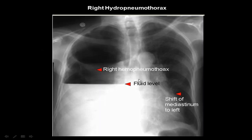There is another pathology: a combination of both air and fluid in the pleural space, which we call hydropneumothorax. Hydropneumothorax has a fluid level differentiating the air above and the fluid below — like this case of right hydropneumothorax with a fluid level and shifting of the mediastinum to the left.